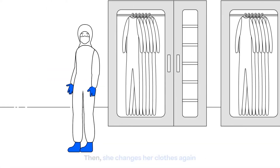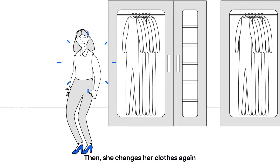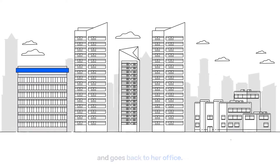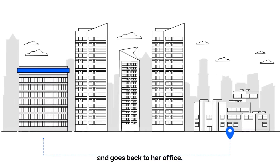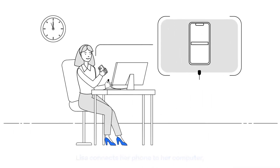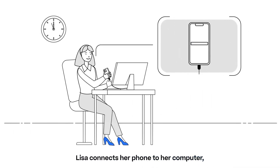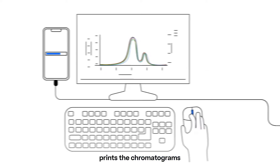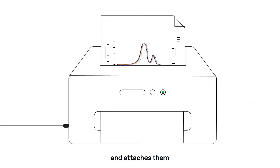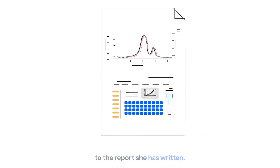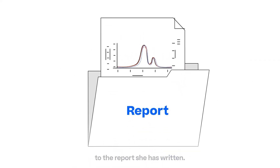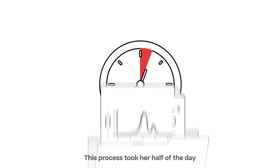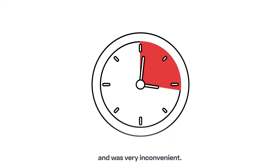Then she changes her clothes again and goes back to her office. In the office, Lisa connects her phone to her computer, prints the chromatograms, and attaches them to the report she has written. This process took her half of the day and was very inconvenient.